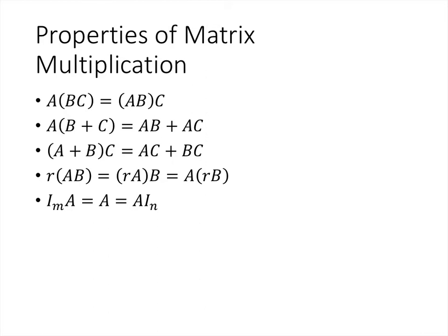The first property is that matrix multiplication is associative. So if we have three matrices multiplied together, it doesn't matter if we multiply the second and third together first and then multiply the first one, or if we group the parentheses around the first and second.